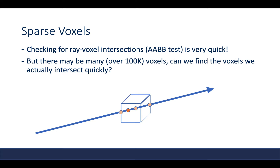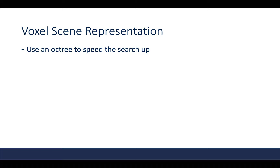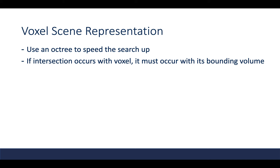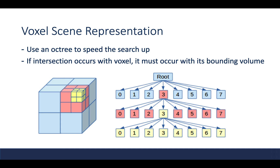We don't want to do intersection tests with all of the voxels in our scene, so we'll see how we can speed this test up. We'll use an octree so that the search is hierarchical. The idea is that if an intersection occurs with a voxel, it must have occurred with its bounding volume. So we only need to check the larger bounding volumes — the parents of the leaf nodes — to ascertain if we need to check the children. This lets us skip a lot of intersection tests by checking the parents first.